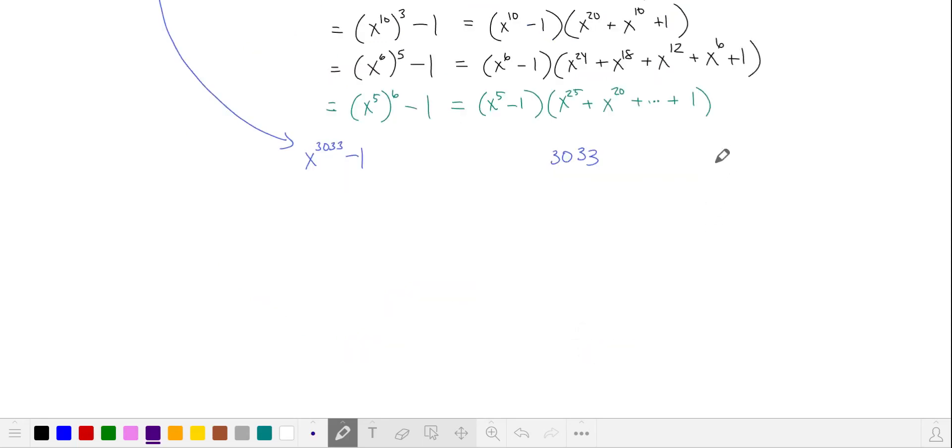Another thing you should do to prepare for the AMC 12 is to know the prime factorization of the current year. That'll save you a little bit of time. So 3033 is 3 squared times 337.